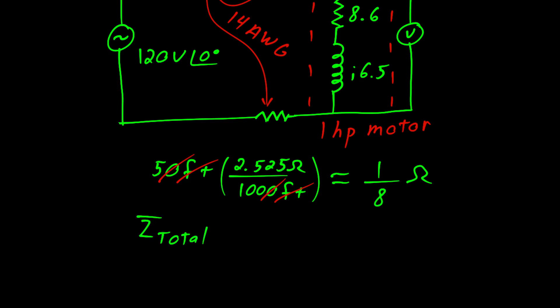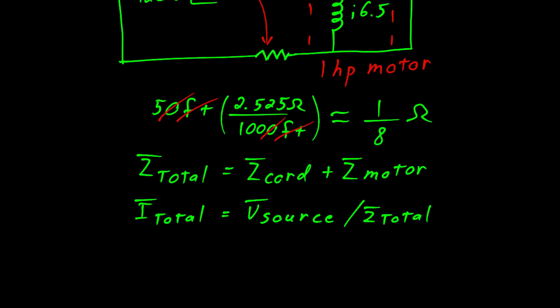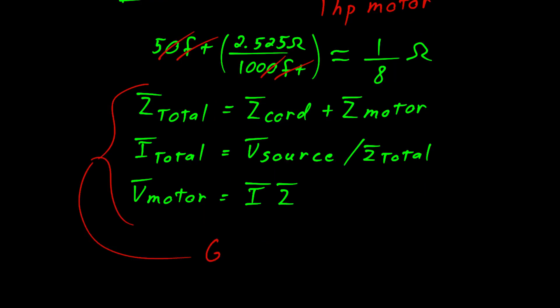First, we can take the total impedance, which is equal to the impedance of the cord plus the impedance of the motor. We can then calculate the total current, which is equal to the voltage of the source divided by the total impedance. We can then calculate the voltage on the motor, which is the total current times impedance of the motor. I'd like to think of these as the great steps of the problem. Symbolically, these are the steps you would have to follow in order to calculate the voltage on the motor.